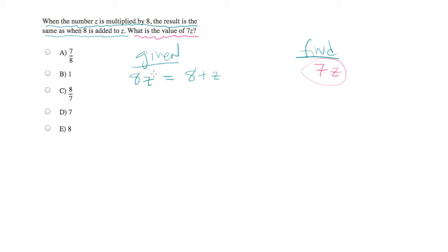Now standard algebra simplification practice: let's collect like terms. So let's collect all the z's. I'm going to subtract z from both sides, and we end up with 7z equals 8.